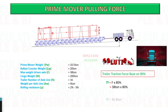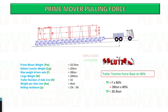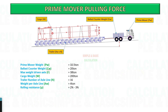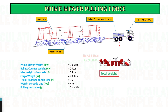For this calculation, we consider 80% only of the driven axle pulling force. See the calculation. Next, calculate the total load that needs to be pulled by the prime mover by adding the weight of cargo, ballast counterweight, prime mover weight, and total trailer axle line weight.